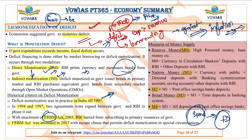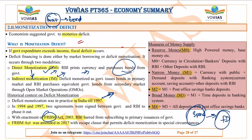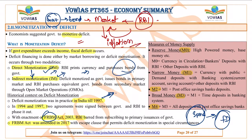In indirect monetization, the government issues bonds to the market, and RBI purchases them indirectly. Because the market is involved, inflation is kept in check. RBI conducts all these purchasing and selling operations through Open Market Operations (OMO), which we have already covered. The government is currently following indirect monetization rather than direct monetization.